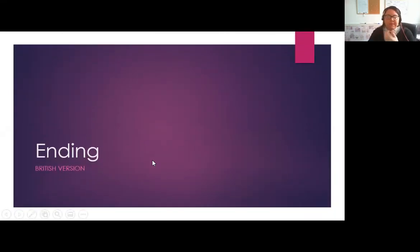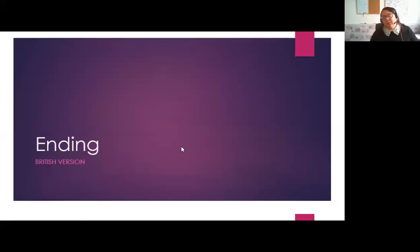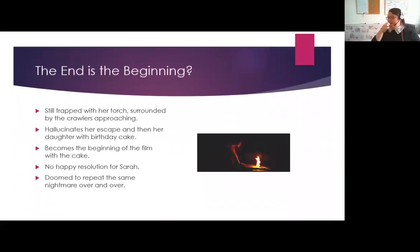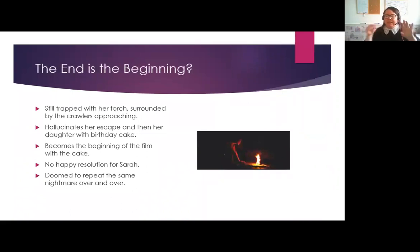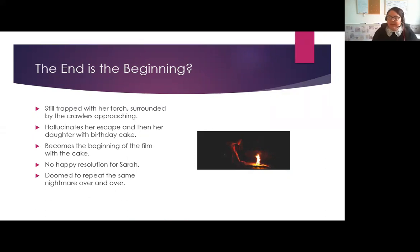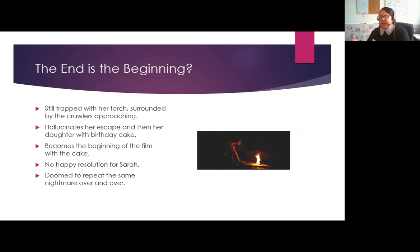The British version - I have to mention the British version - because it ends with the birthday cake, which is where we began. It ends where she hallucinates that she gets out: you see this great scene where she escapes and you think 'thank god she got out' - but she doesn't. It's a hallucination. She's still back in the cave with her torch, seeing her daughter again with the birthday cake - the exact same one we see at the beginning. She's still seeing her daughter, still not okay, hasn't managed to repair the trauma. So we've got this torch, this birthday cake, and this loop - and the next part could very easily be back around to the beginning.